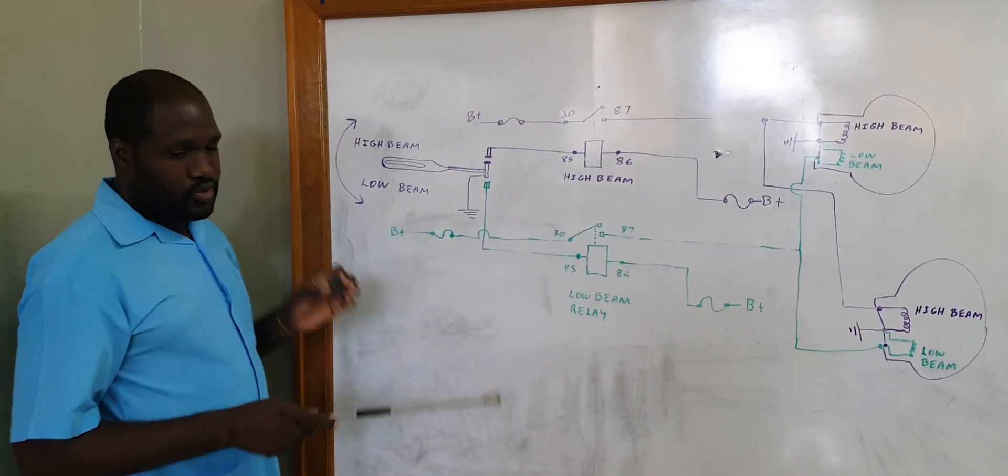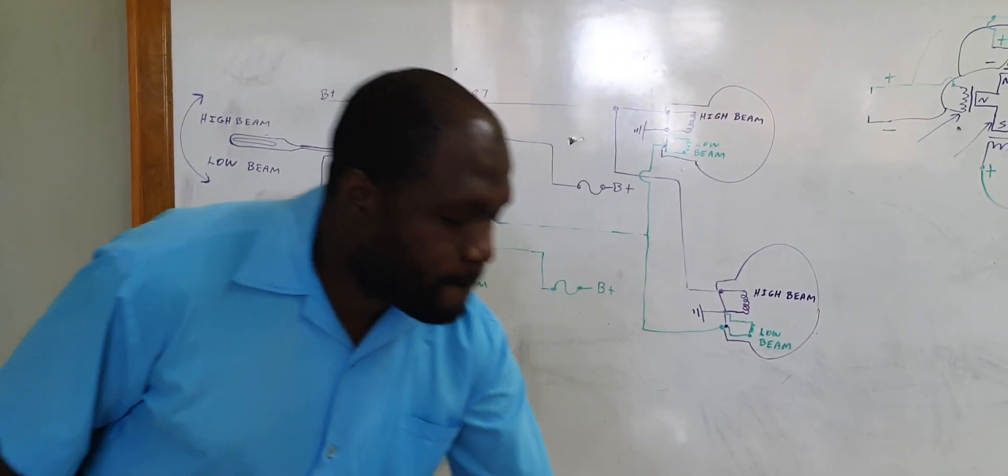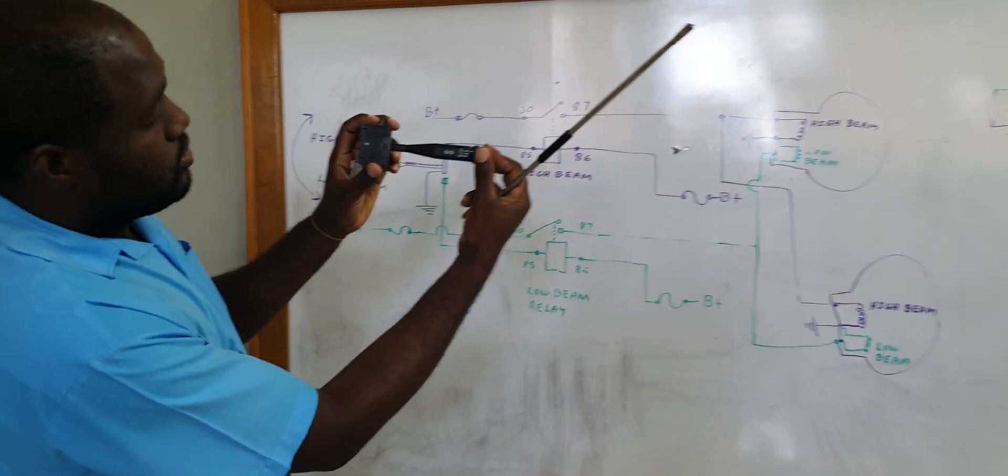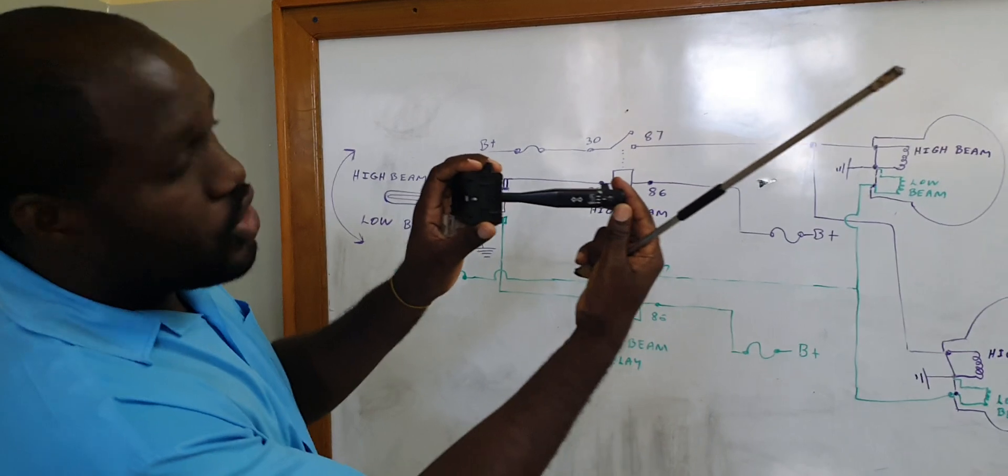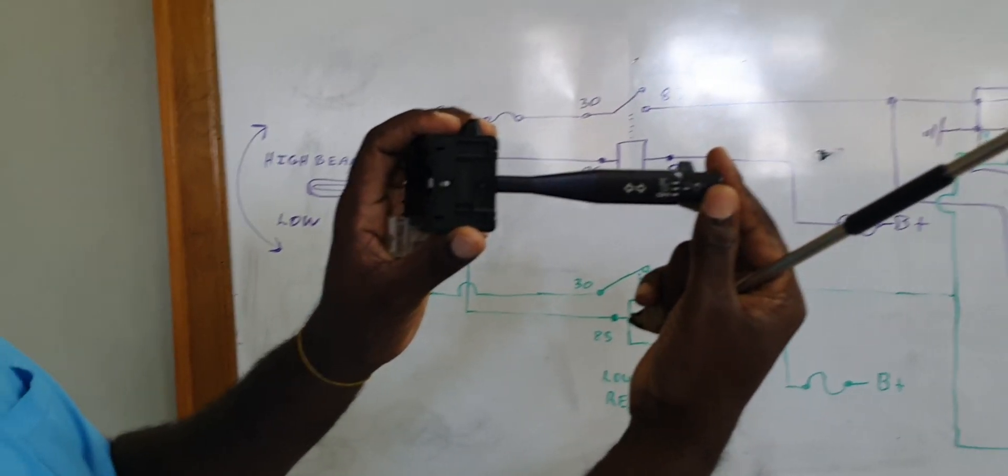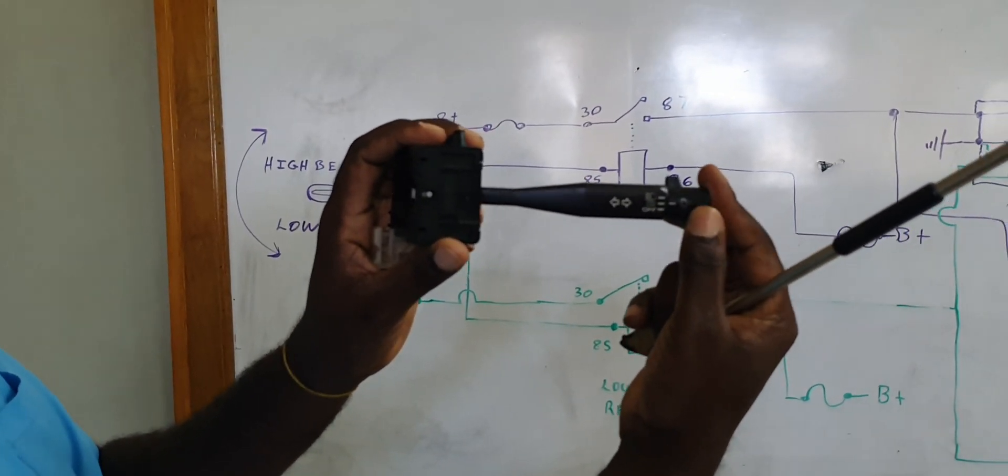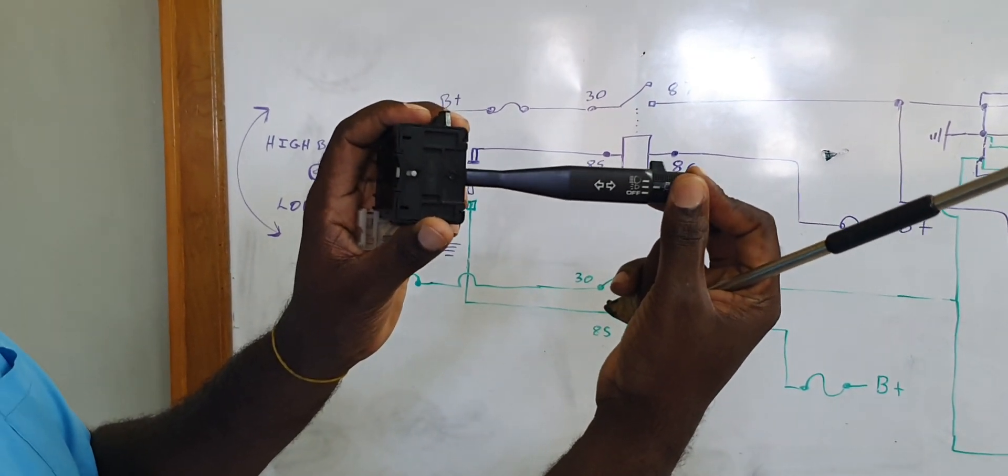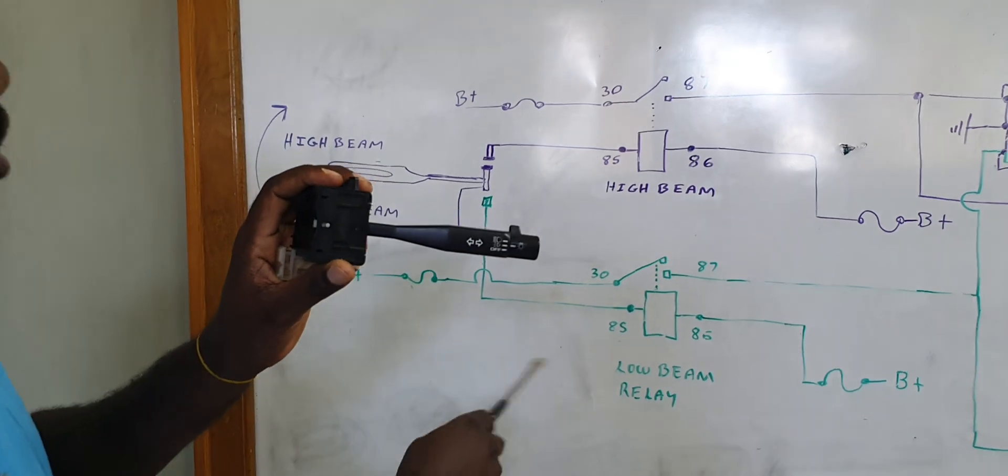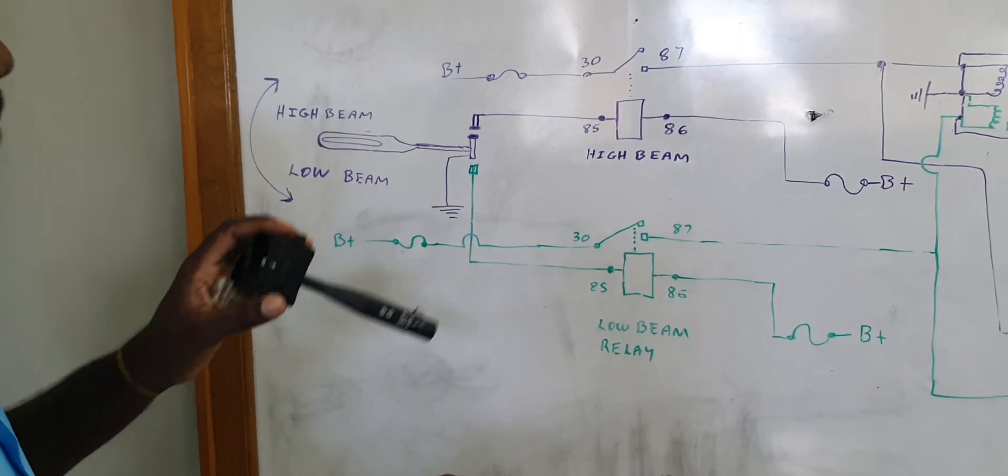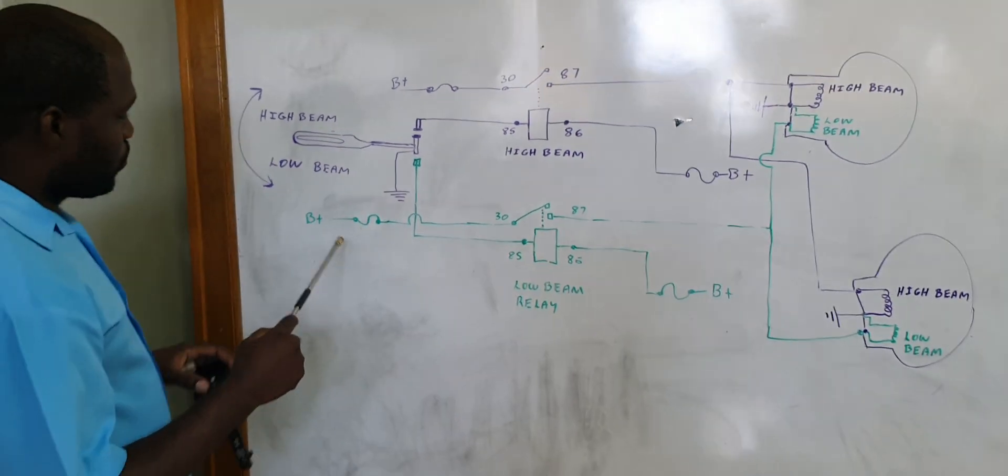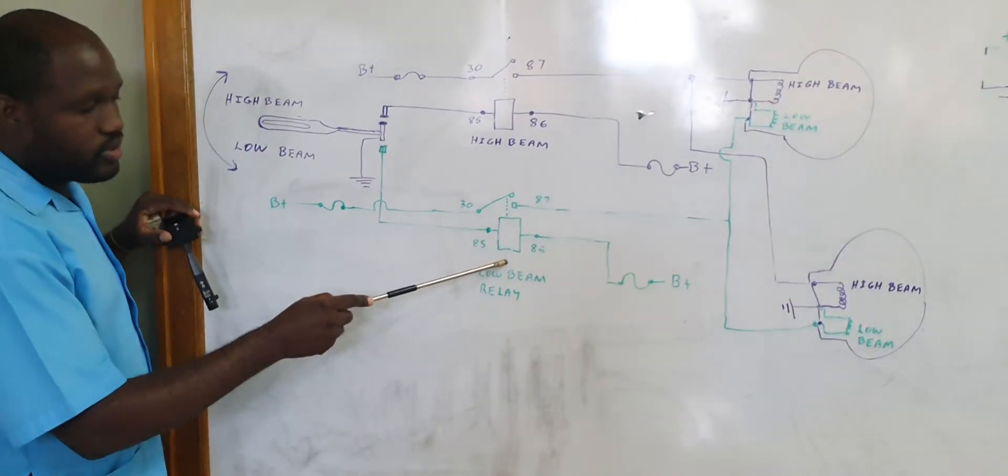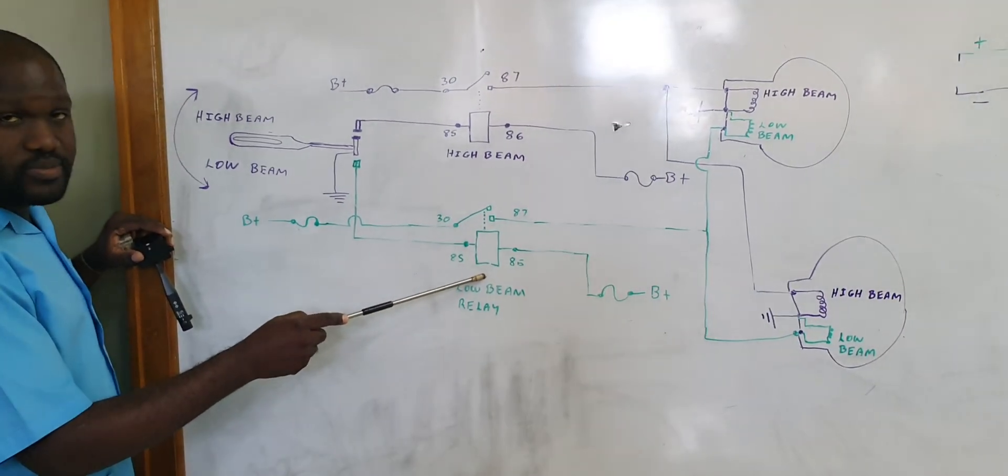Low beam now. When we turn on the low beam, we'll activate the lower circuit in the green. So here we have a relay that represents low beam circuit.